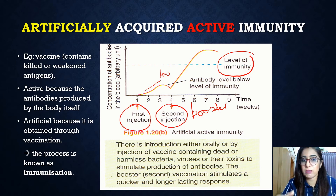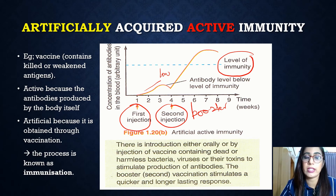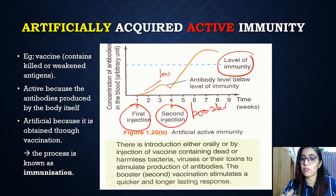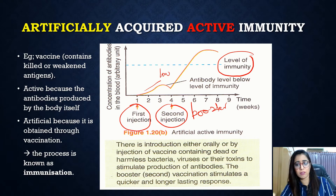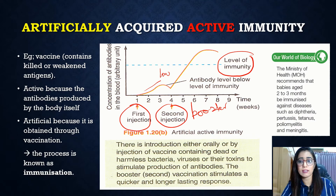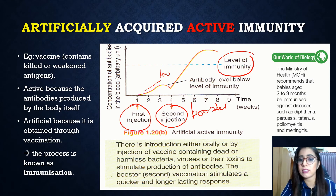If the individual is then infected by the actual pathogens, the lymphocytes will produce enough antibodies to immediately destroy the pathogens. Examples of vaccines include the Salk vaccine for poliomyelitis, the BCG vaccine for tuberculosis, and the HPV vaccine for cervical cancer. The Ministry of Health also recommends that babies aged two to three months be immunized against diseases such as diphtheria, pertussis, tetanus, and many others.